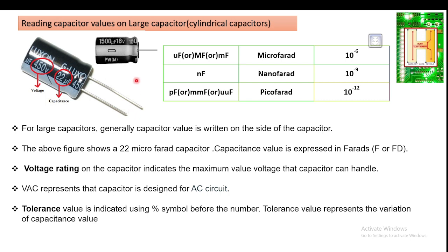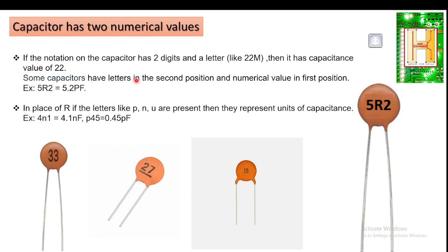The next series is called the two-numerical-value capacitor — these are ceramic type capacitors. Here you can see values like 33, 27, 15, or 5R2. If the notation has two digits like 22M, it has a capacitance of 22 picofarad. These always use the value of picofarad. Some capacitors have a letter in the second position and numerical values in the first and last positions.